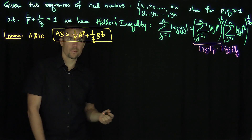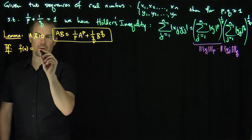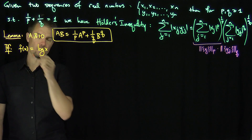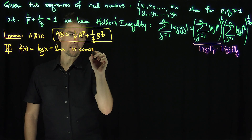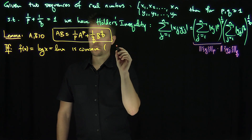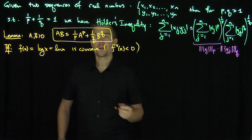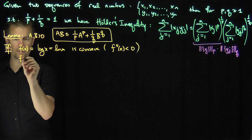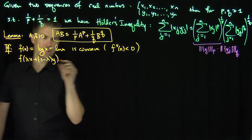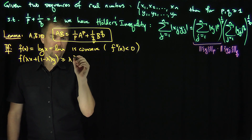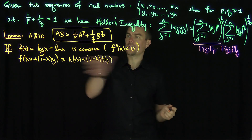How do we prove this lemma? We know that f(x) = log(x) — the natural log — is concave, meaning f''(x) is strictly less than zero. Concave functions are characterized by the inequality: f(λx + (1−λ)y) ≥ λf(x) + (1−λ)f(y). That's the concavity inequality we'll apply, where 1/p and 1/q play the role of λ.